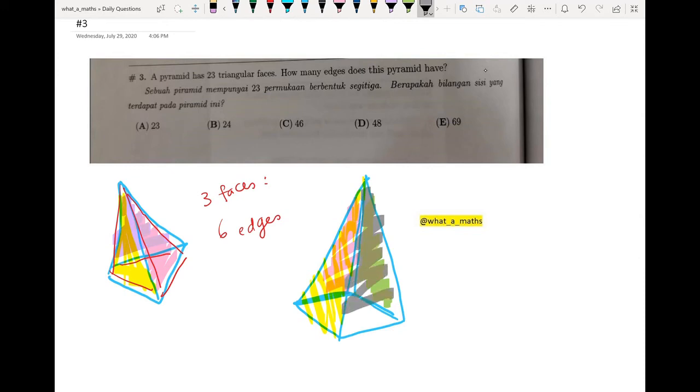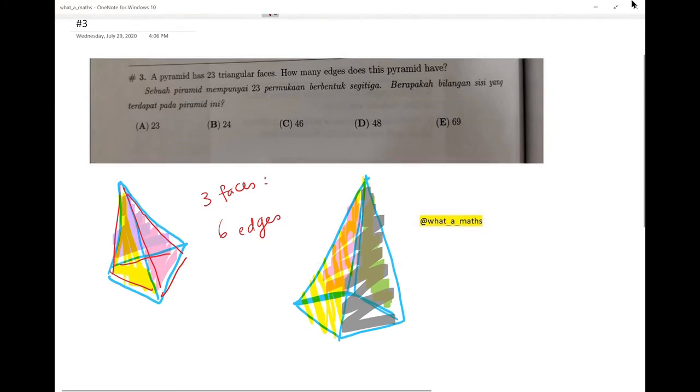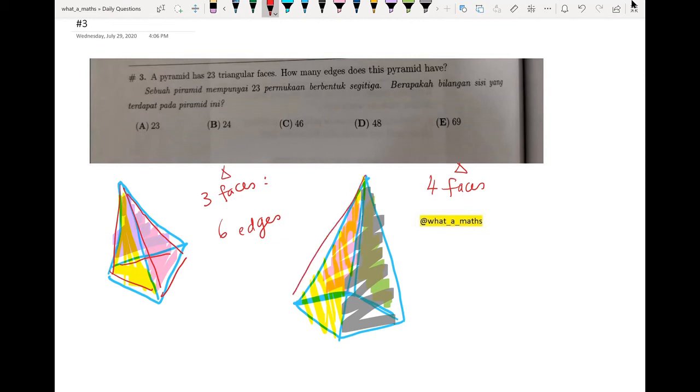So how many edges will I have? Okay, this is a pyramid with four triangular faces. So how many edges will I have? One, two, three, four, five, six, seven, and eight. So a pyramid with four faces will have eight edges. A pyramid with three faces will have six edges. We see the pattern already.